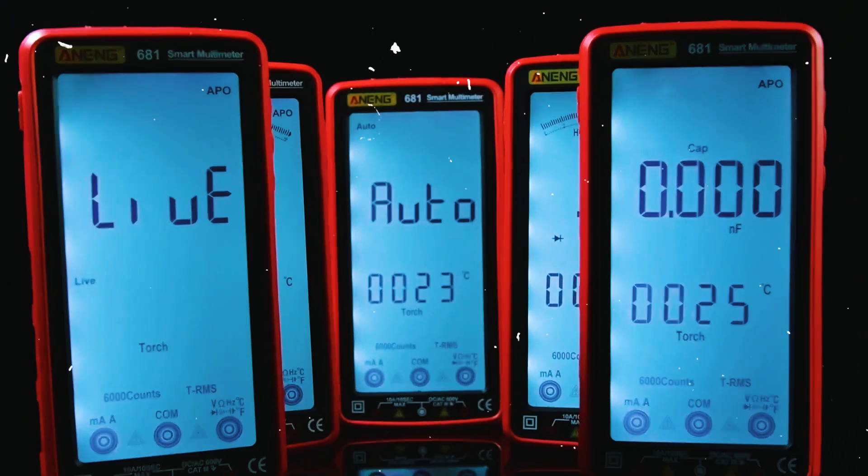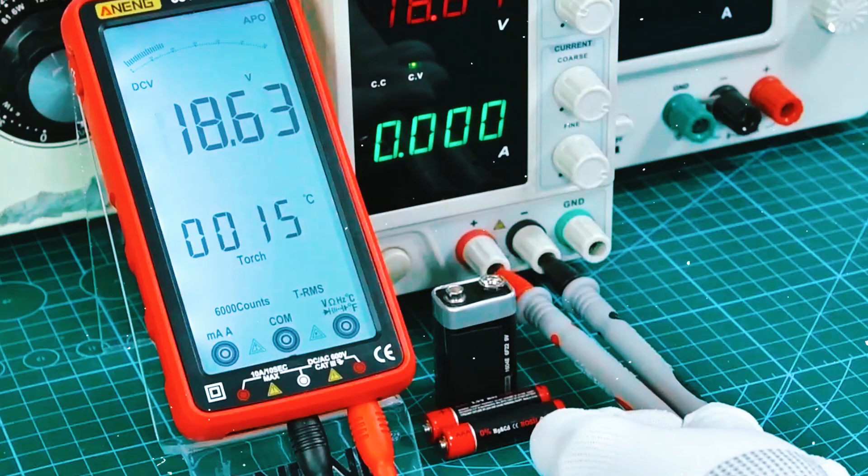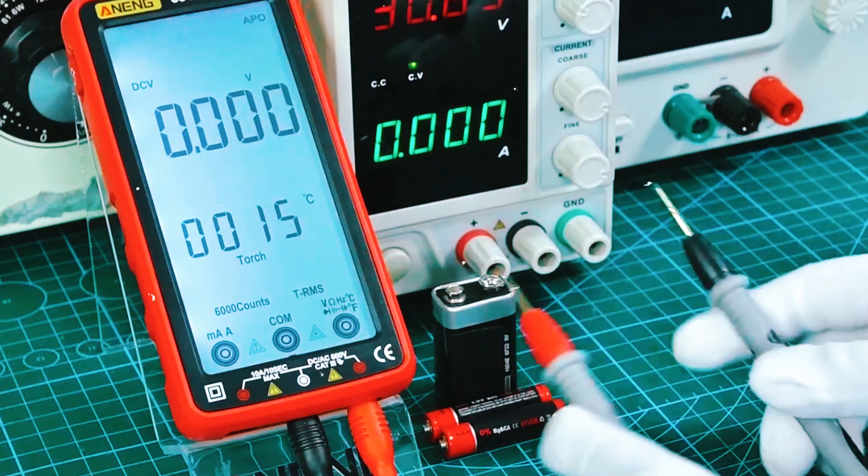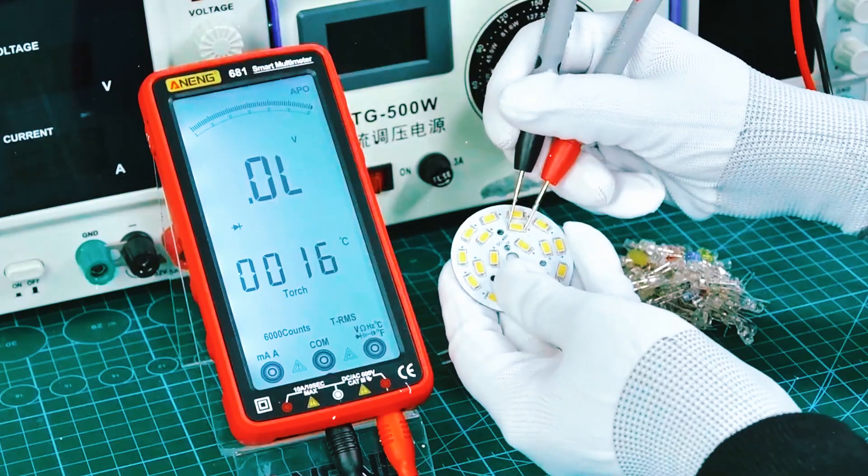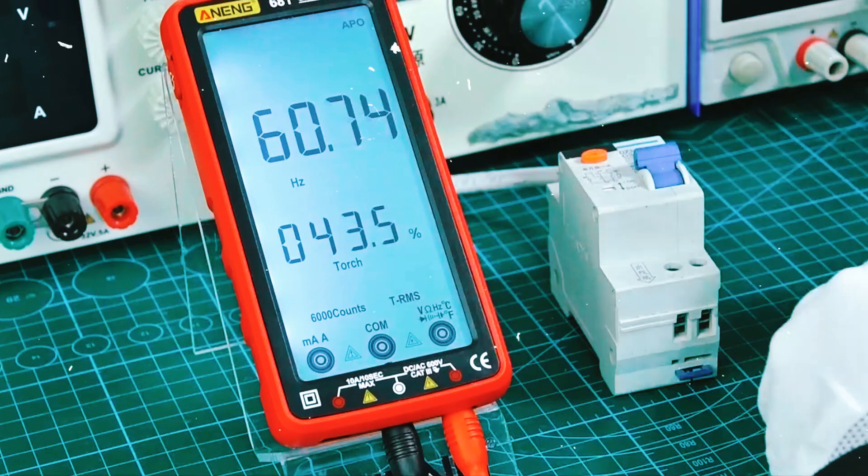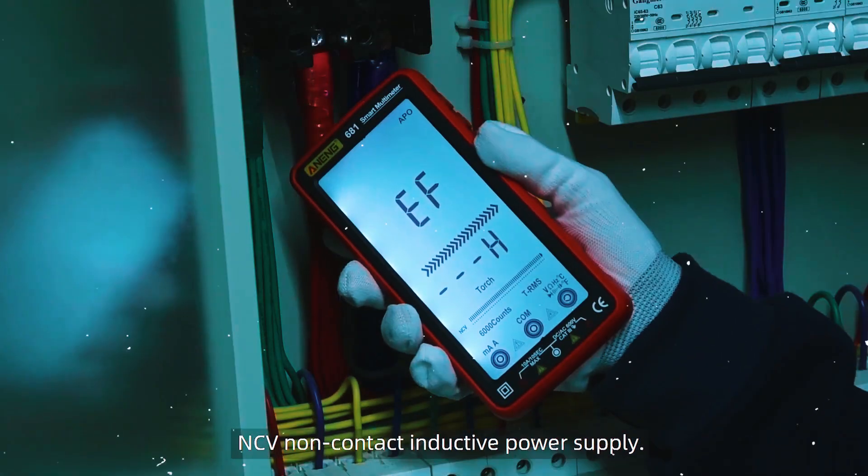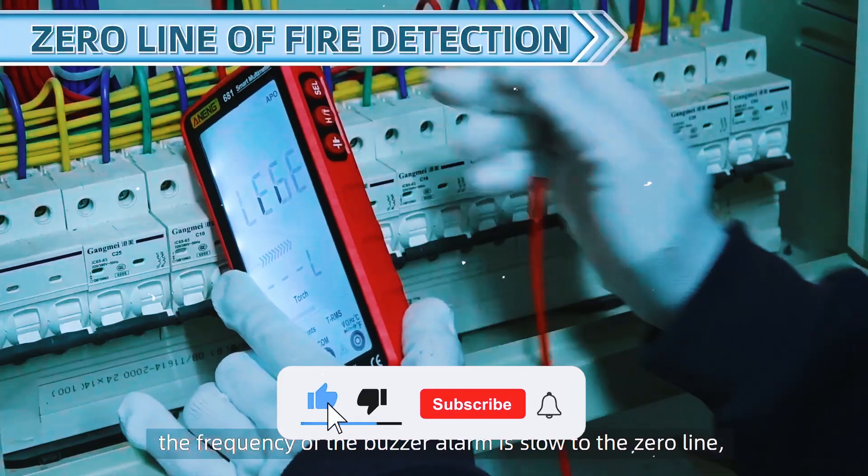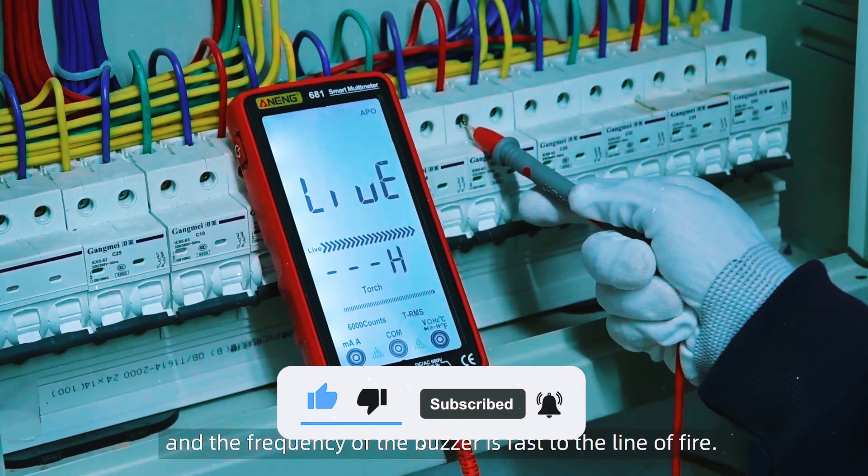First, let's talk about digital multimeters. If you've ever used one, you know they show measurements on a clear digital display. This is where they shine. Digital meters give you precise, easy-to-read numbers. You don't have to worry about interpreting a needle's position. Everything is spelled out for you in a digital format.